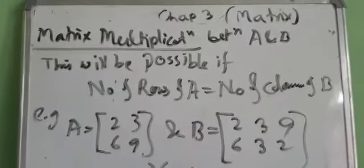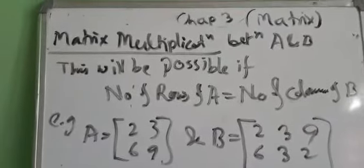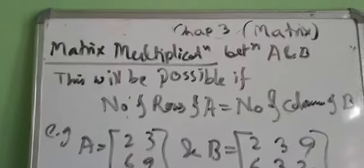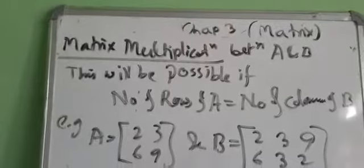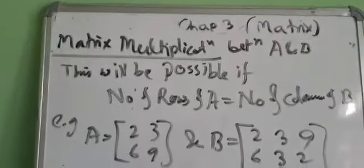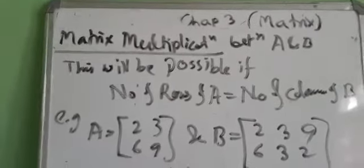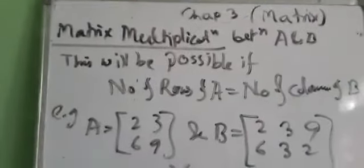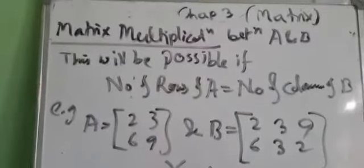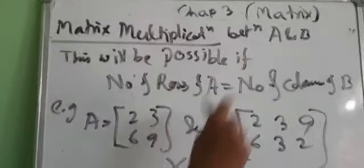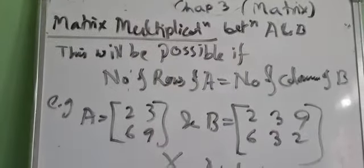Matrix multiplication between two matrices, say A and B, will be possible if the number of rows of A is exactly equal to the number of columns of B.